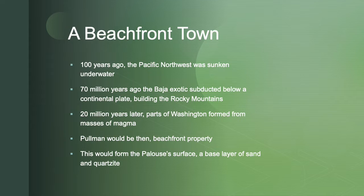Pullman and the neighboring regions were now beachfront property. The Palouse's surface was only some sand and quartz from the oceanic volcanic activity, and this would be the basis of Kamiak Butte's geology.